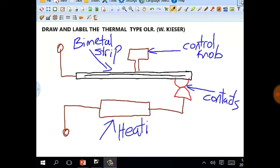And this brings us to the end of the thermal type overload relay used as protection devices for DC motors.